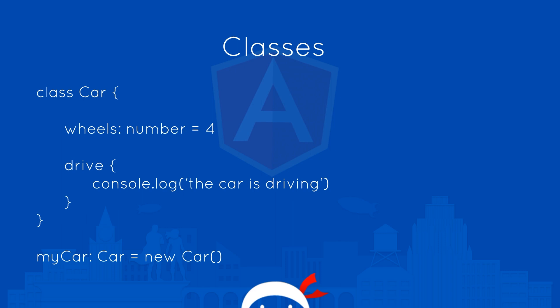Another addition in TypeScript which we are going to use a fair amount in this tutorial series are classes. Classes are very simple — it's just like setting up an object in JavaScript. We could have a class which is Car, and then we give that class properties, such as wheels, which is a number, and that's equal to four. We can also give it functions or methods — in this case it's called drive, and it just logs the car that's driving to the console. Then we can create a new car by declaring a variable my car, setting it equal to the car type, and setting it equal to a new car instance.